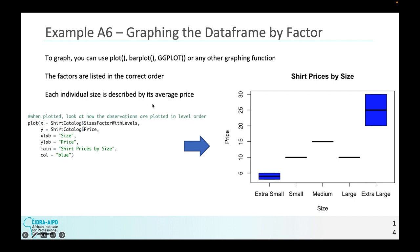Each individual size is described by its average price. If you'll recall, there were several observations with multiple prices. Most of them did not have several prices. Therefore, on this plot, we see small, medium, large. They have one observation and then extra large and extra small. You can see the two observations and the average between the two. And essentially box plots.